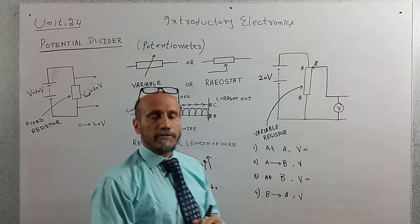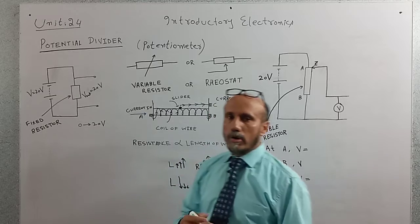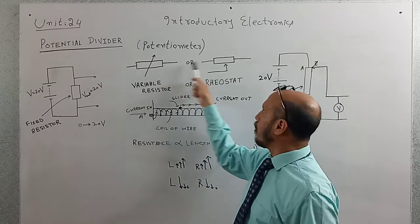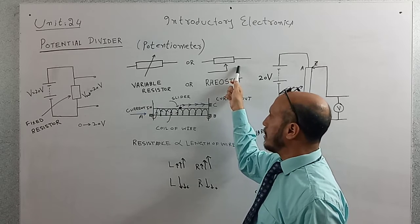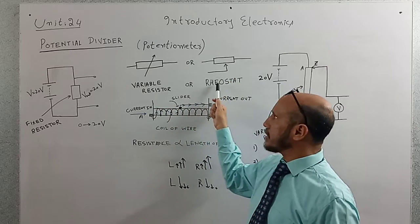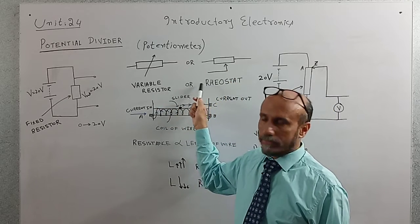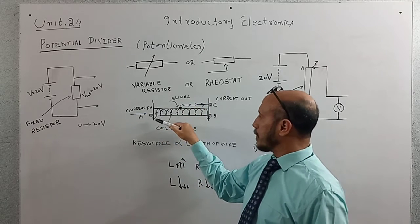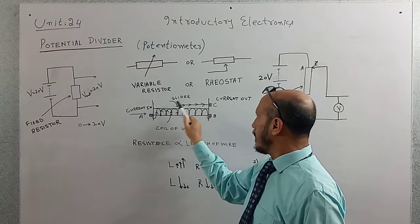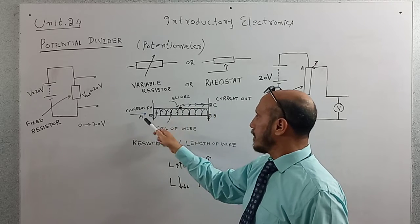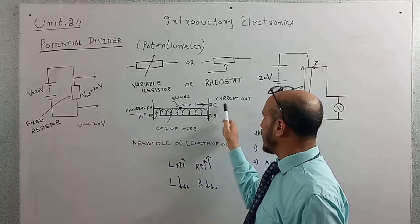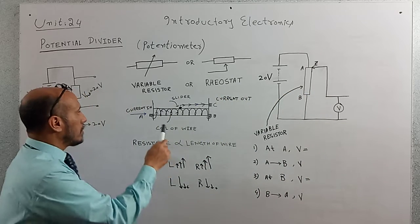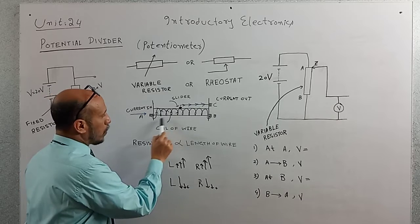A potential divider is a sort of variable resistor. The symbol of a variable resistor can be drawn in two ways. A variable resistor is also called a rheostat. It actually comprises of a coil of wire, a slider, an input current, and an output current.